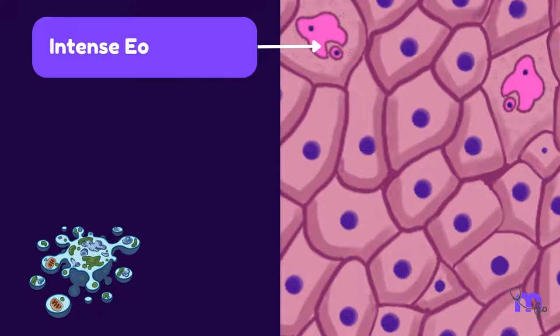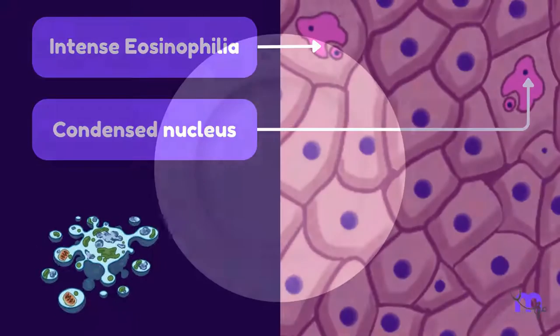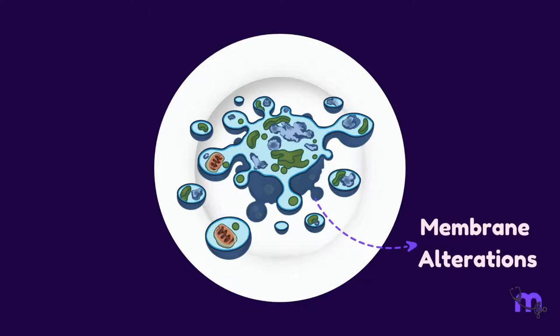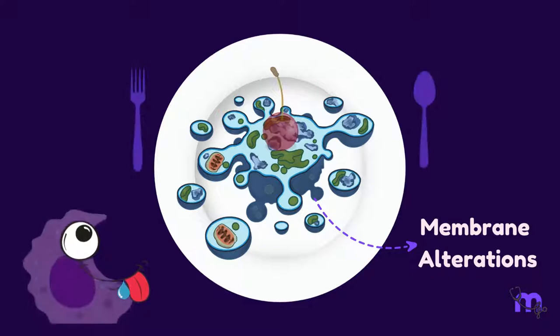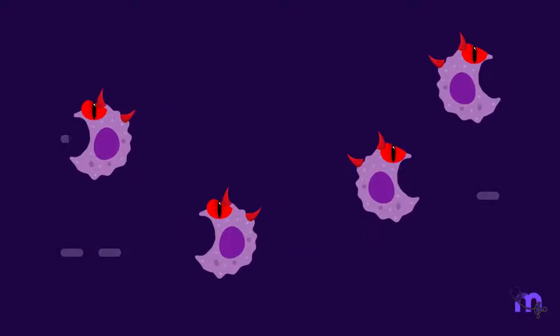It has intense cytoplasmic eosinophilia and a condensed or fragmented nucleus. An apoptotic cell has membrane alterations that send out eat me signals. They become a yummy treat for the hungry phagocytes that gobble them up.